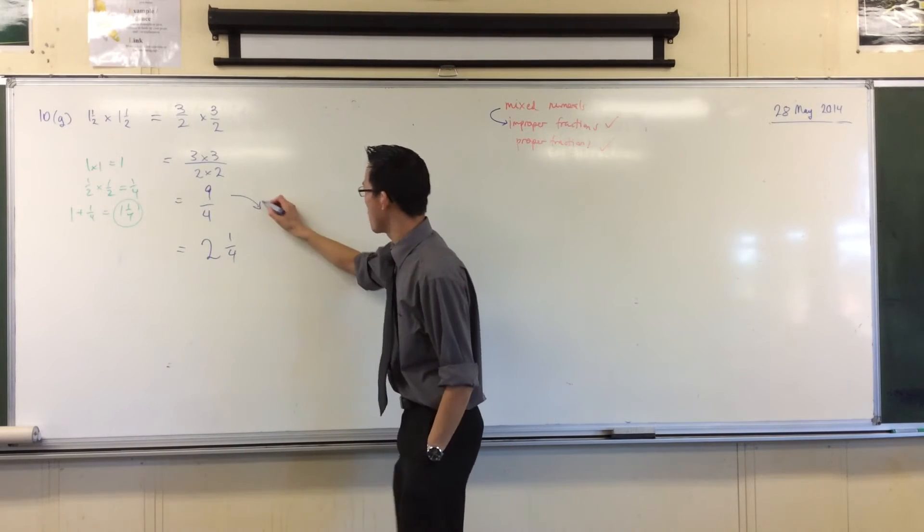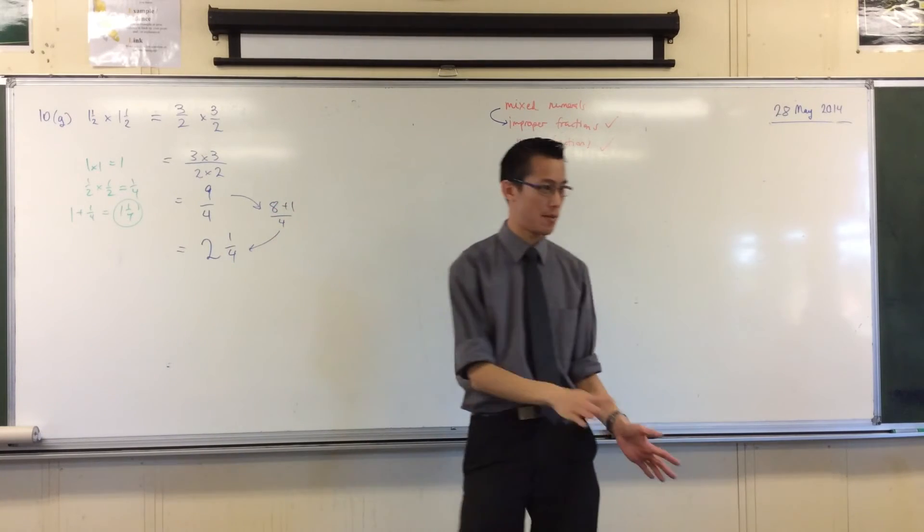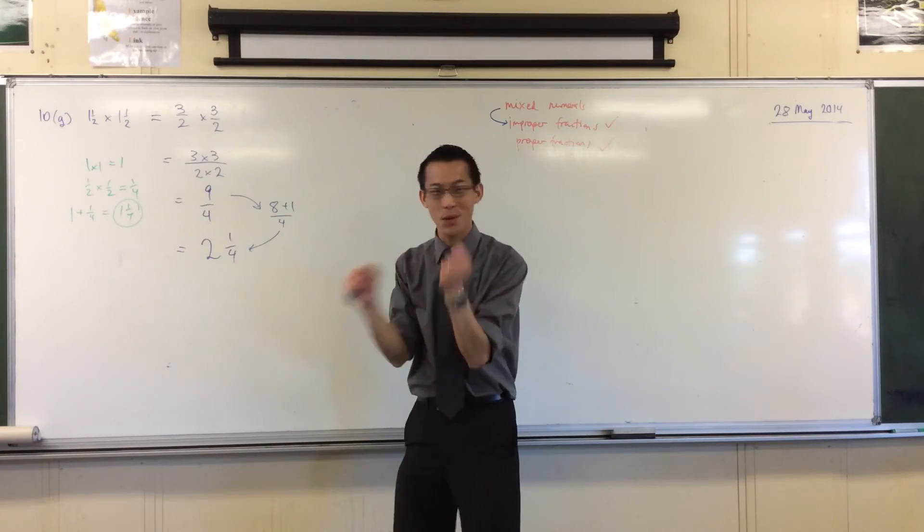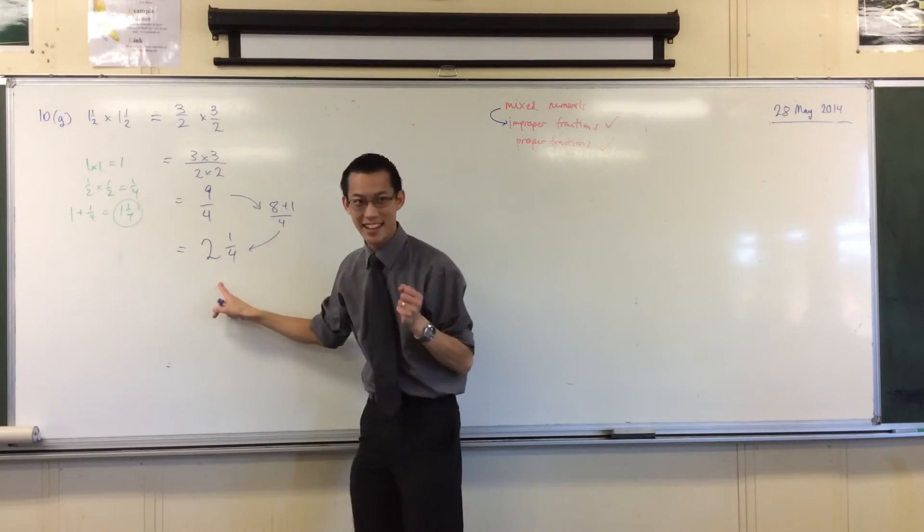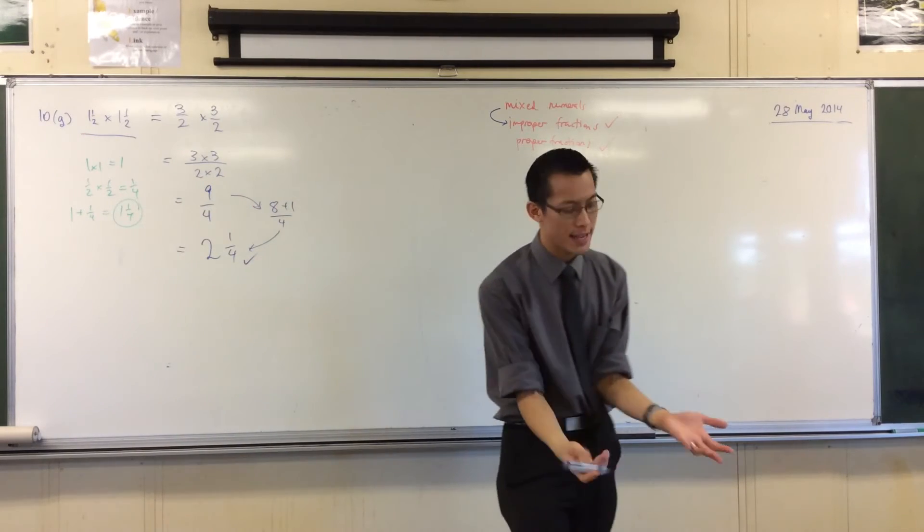Some of you as well might write it like this: 8 plus 1 over 4, because 8 plus 1 is 9. 8 over 4 is 2. It's exactly the same thing, okay? But the importance to me is, you just show this working. I know you want to go straight from here to here, or even not even write this down, just write down the answer.